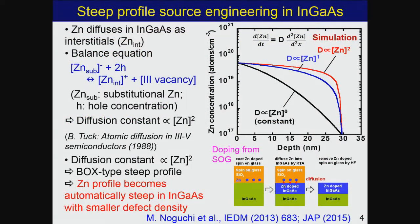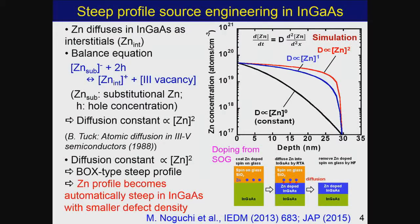The reason zinc diffusion works so well is summarized here. Zinc diffusion in III-Vs is a well-known mechanism — interstitial zinc is the main diffuser of P-type impurities. Interstitial zinc concentration is determined by a balance equation involving substitutional zinc concentration and hole concentration. So, by increasing substitutional zinc, hole concentration increases, and the interstitial zinc diffusion becomes strongly dependent on hole concentration. It turns out that the diffusion constant of zinc is proportional to the square of the zinc concentration.